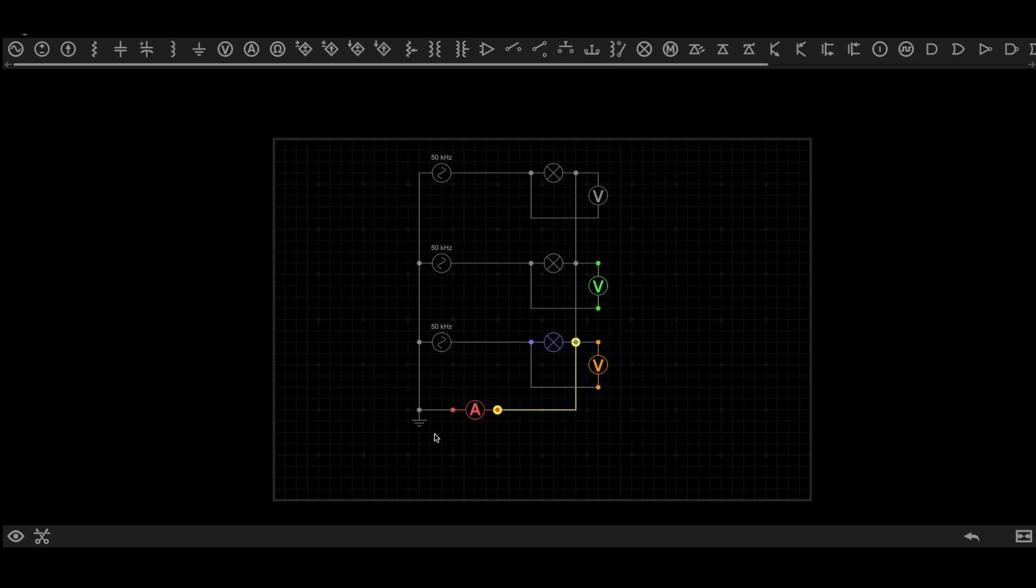Now across each load we have connected a voltmeter to check the voltage across each load. An ammeter is connected in series in the neutral wire. This ammeter will tell us if any current flows through neutral.